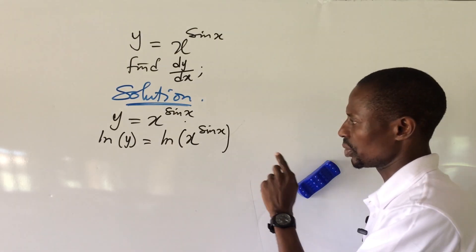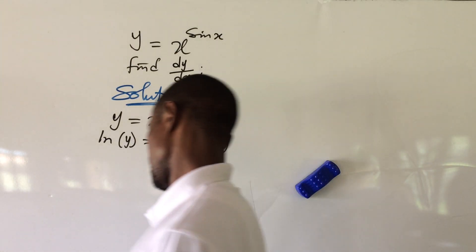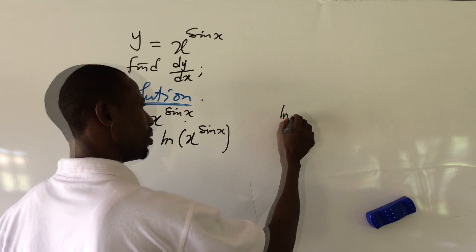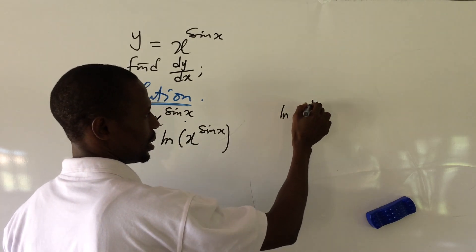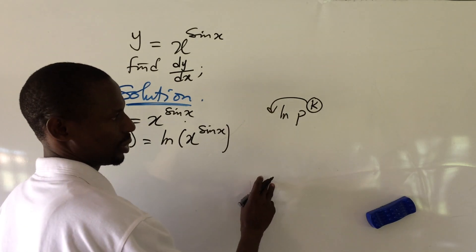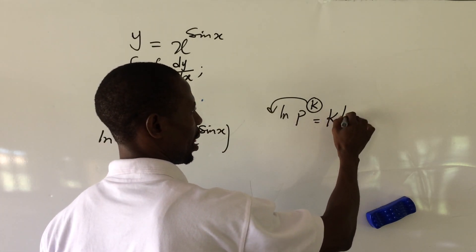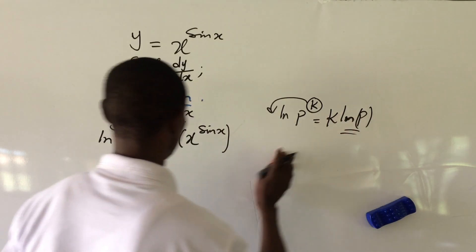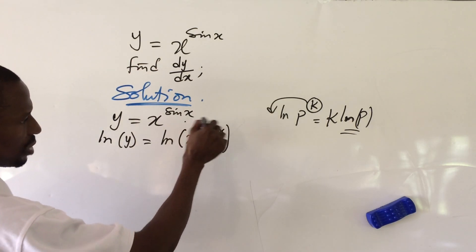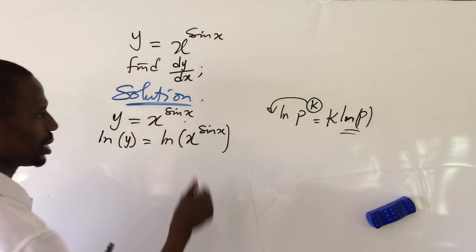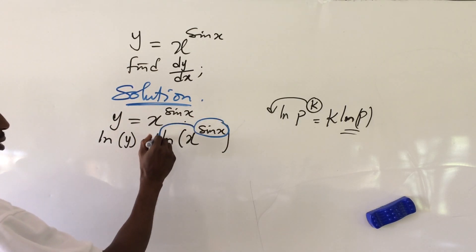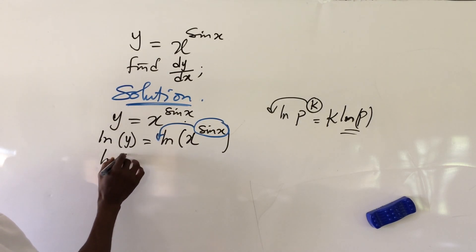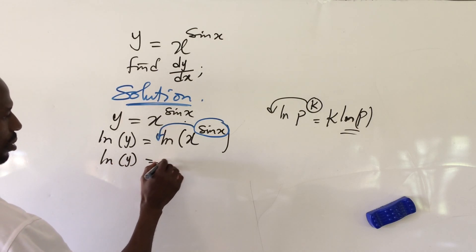Now we apply the rule of logarithms, which states that if you have ln(p to the power of k), you move this power forward so it becomes k·ln(p). If we apply this rule, we move the power backward.